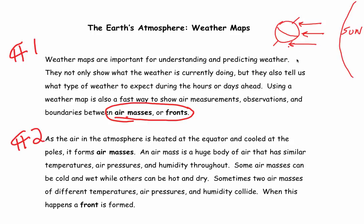You will notice that in this particular sketch, this would be summertime in the Northern Hemisphere because the Earth is tipped toward the Sun, and so the Northern Hemisphere gets more direct sunlight than the Southern Hemisphere, which gets sunlight at quite a bit of an angle.